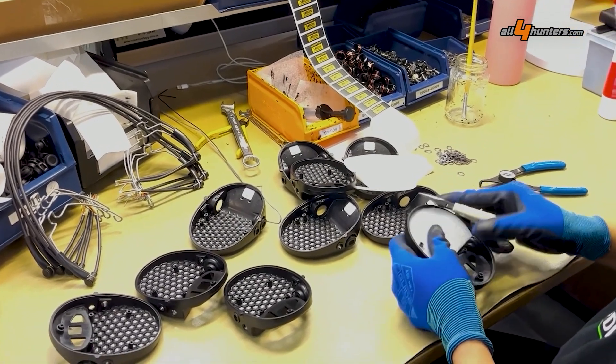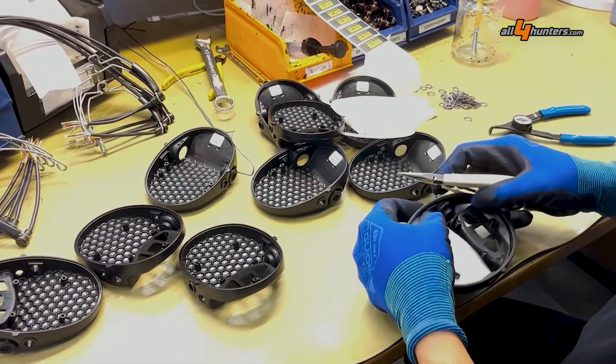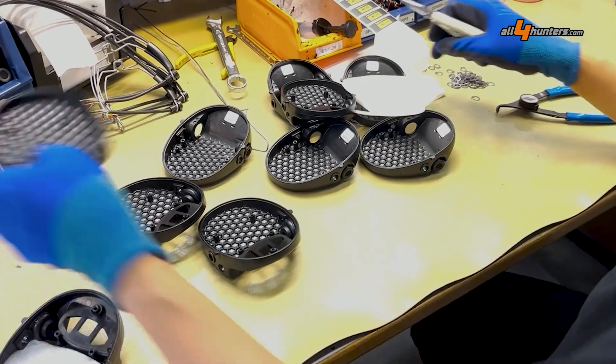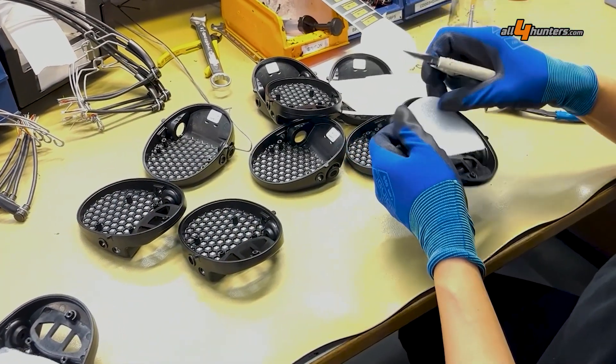Then foam padding goes into the cups. It is included to protect the boards later if the hearing protection bumps into something or falls off.